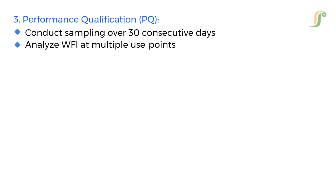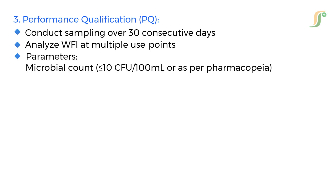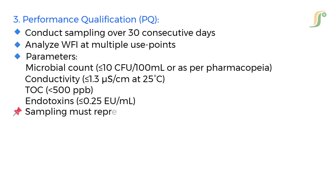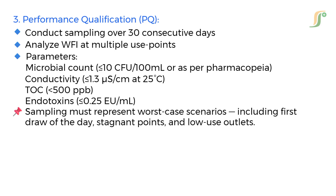Third, Performance Qualification: conduct sampling over 30 consecutive days and analyze WFI at multiple use points. Parameters to verify during PQ include: microbial count — less than 10 CFU per 100 ml or as per pharmacopoeia; conductivity — less than 1.3 microsiemens per centimeter at 25°C; TOC — less than 500 ppb; and endotoxins — less than 0.25 EU per ml. Sampling must represent worst-case scenarios, including first draw of the day, stagnant points, and low-use outlets.